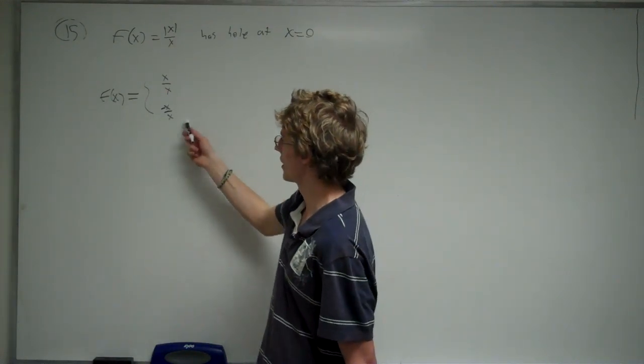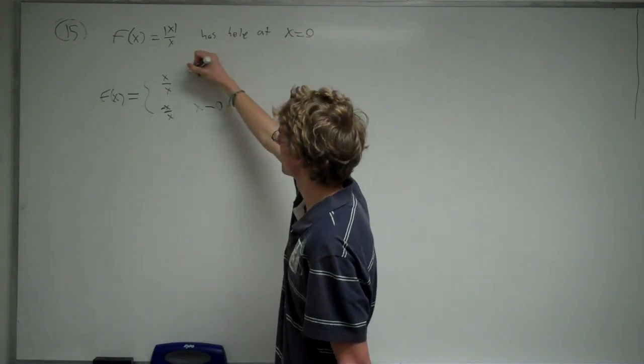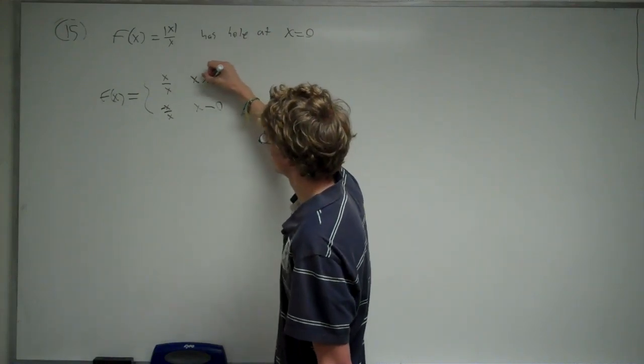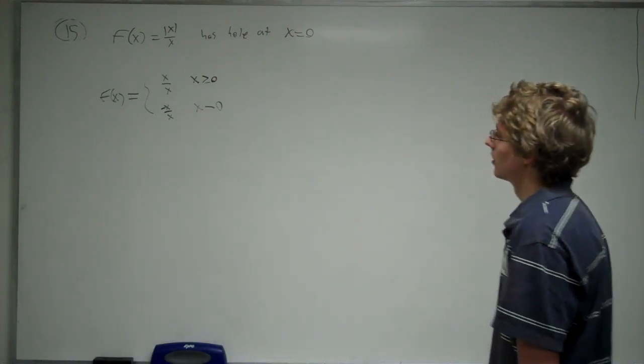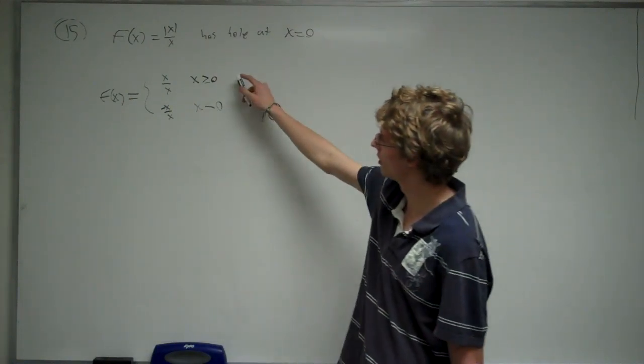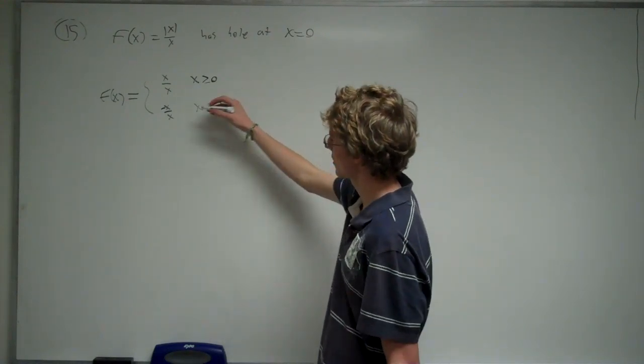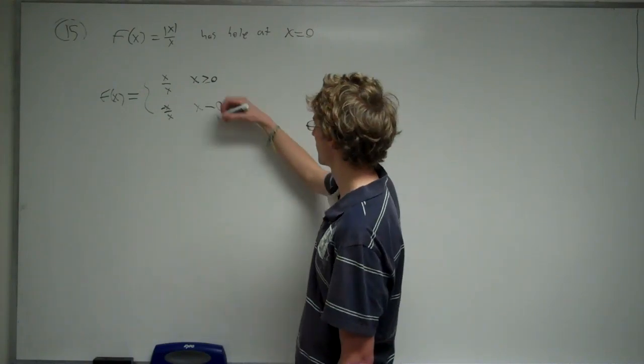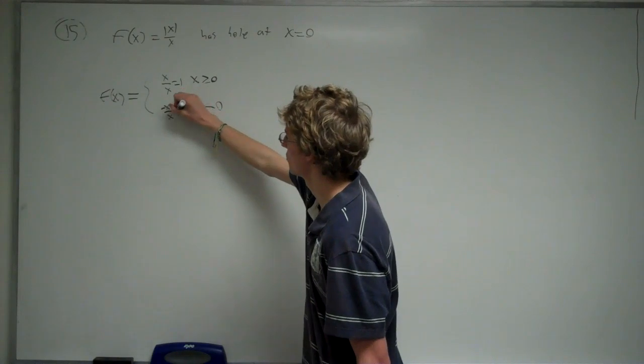So, we have to have two values. Now, it's negative when x is less than 0 and it's positive when x is greater than 0. So, this is our piecewise function. So, we can graph this and to graph this, x over x is 1 and negative x over x is negative 1.